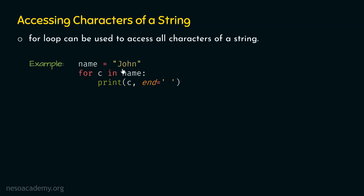So when we see the output, we will see J, then the white space character, then O, then the white space character, then H, then the white space character, then N, then the white space character. After executing this code, we will get the output: J O H N. As it can be observed, each character is separated by a white space character. I hope you have understood how to access each character of a string using for loop.